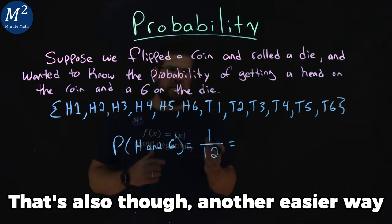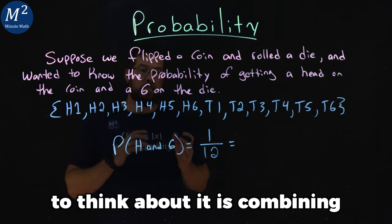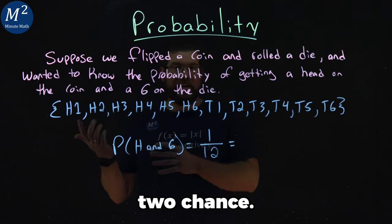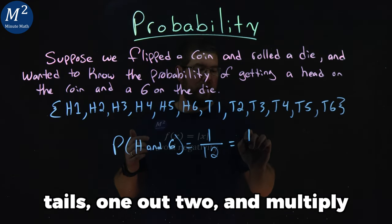There's also another easier way to think about it, which is combining our probabilities. A head is one out of two chance—heads or tails, one out of two.